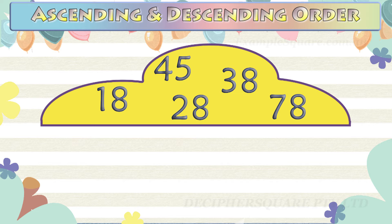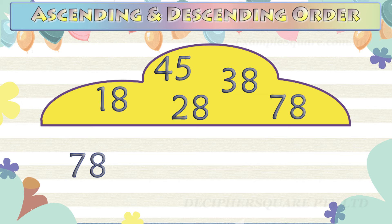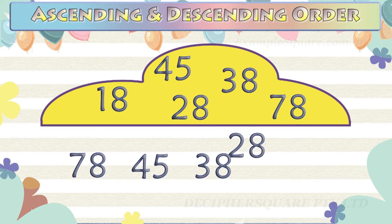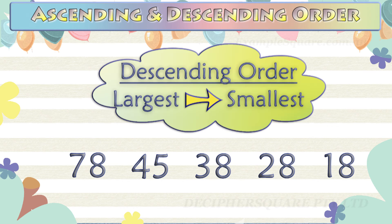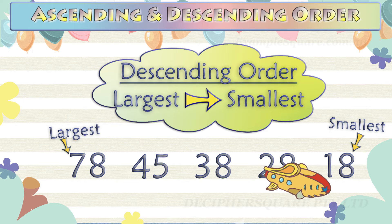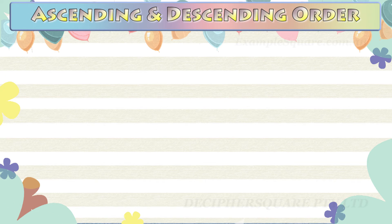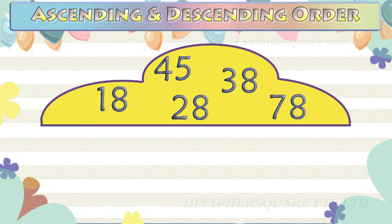Five numbers are given. Here is an example of arranging these numbers in descending order. Five numbers are given. Here is an example of arranging these numbers in ascending order.